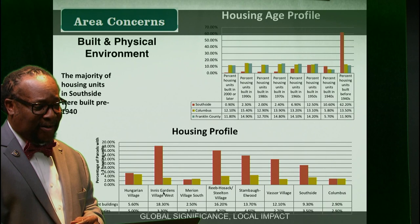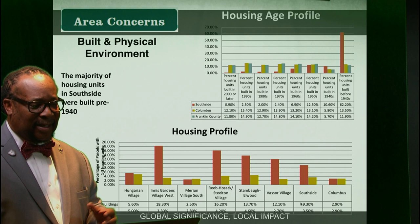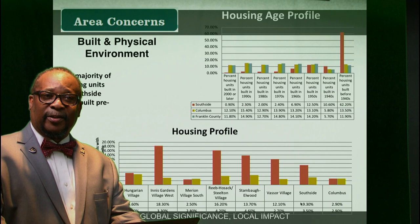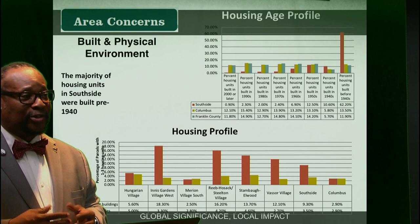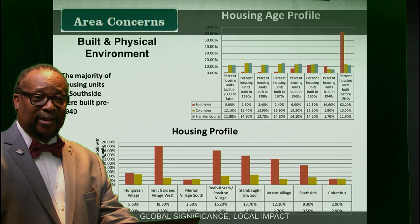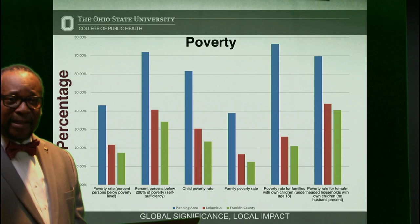Relevant to that discussion is the state of housing in the Southern Gateway. We've broken down the housing profiles for all of the communities that comprise the Southern Gateway — Hungarian Village, Ennis Gardens, Merian Village, Reeve-Holsak, Stanball-Elwood, Vasa Village, and the entire South Side relative to Columbus. All of these areas tend to have a majority of housing units built pre-1940. What does that mean? That indicates there was probably a disproportionate amount of lead in these homes — lead is a neurotoxicant, and there is really no safe exposure level to lead. What Flint, Michigan and Sebring, Ohio has taught us is exactly that.